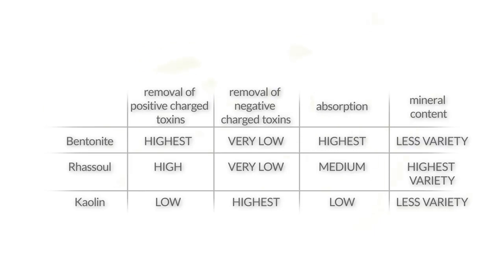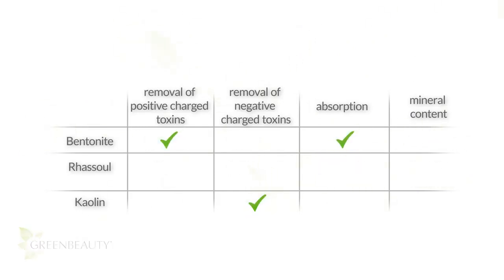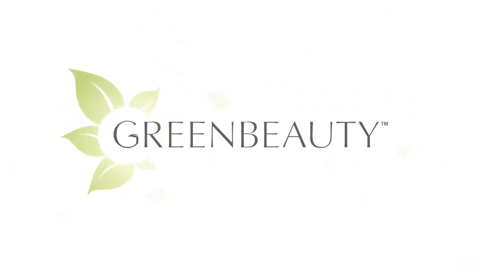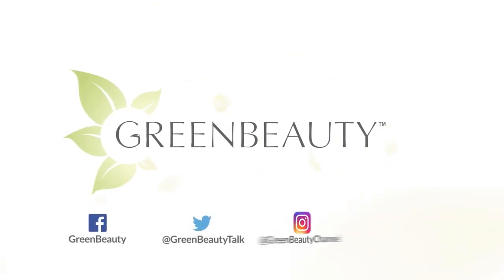Here's an easy-to-read overview when comparing the three clays: what makes bentonite clay special is its high cation exchange capabilities and absorption power. What makes rasul clay special is its high variety of beneficial minerals. And what makes kaolin clay special is its anion exchange capabilities. This is the information we're going to use to make a more effective recipe in the next video. I hope this video was helpful — as always, thanks for watching, see you in the next video.